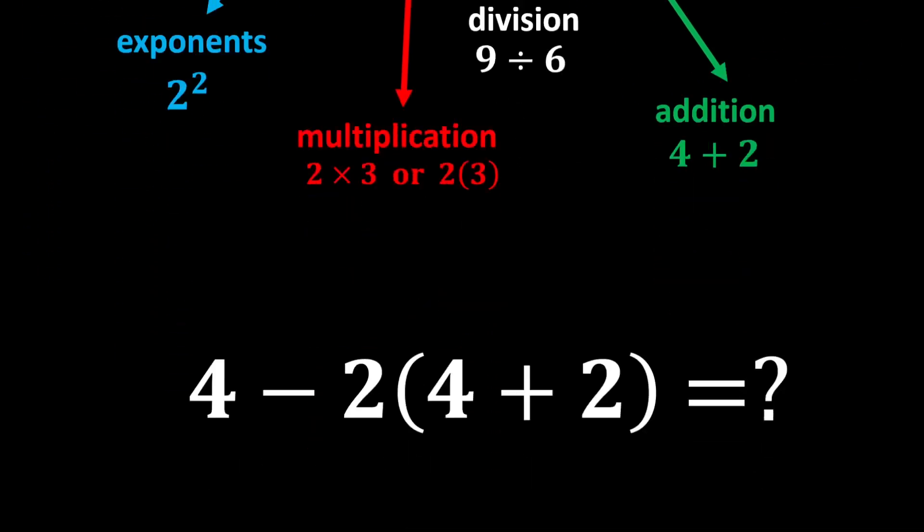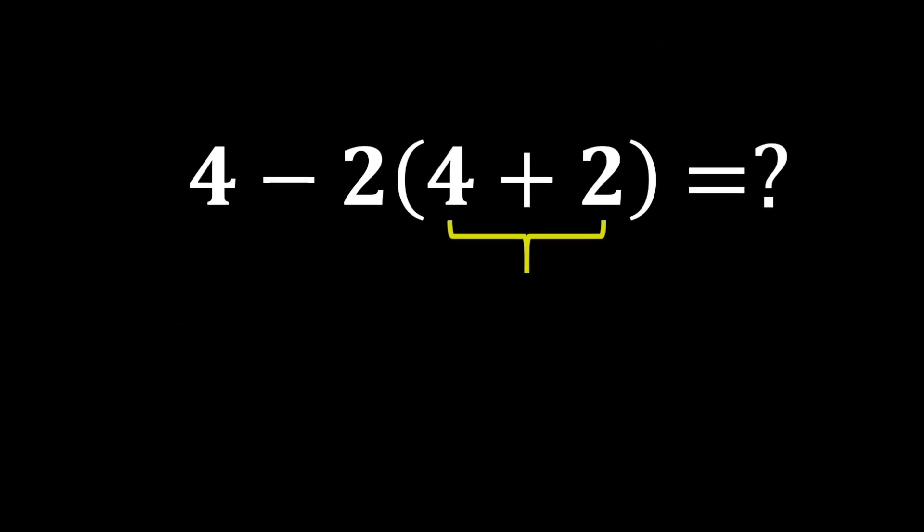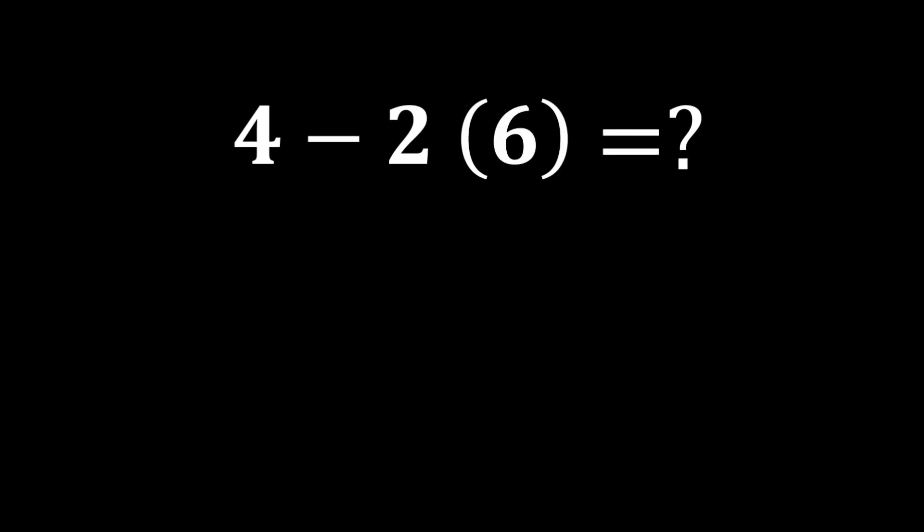According to PEMDAS, we must first calculate what's inside the parentheses before anything else. So 4 plus 2 becomes 6, and the expression turns into 4 minus 2 times 6.